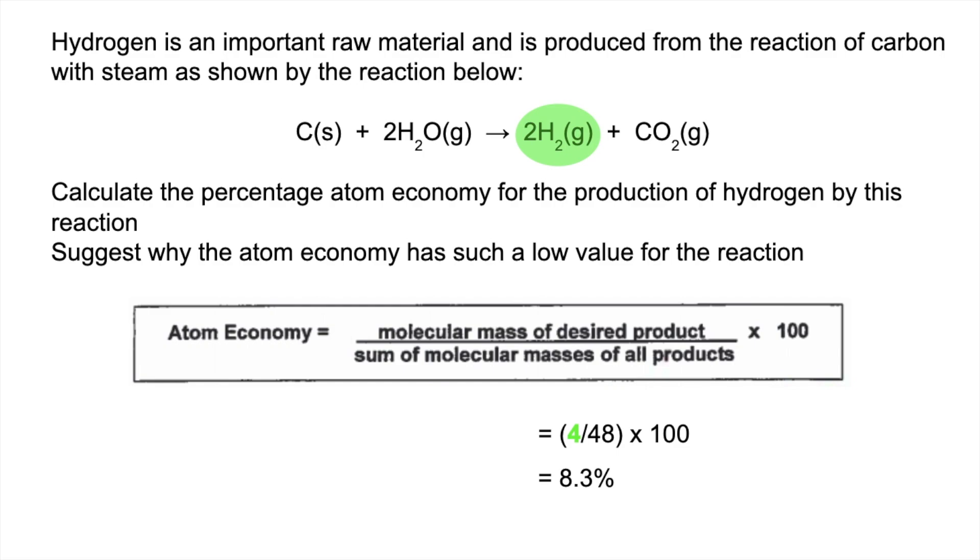So we've got to come up with a reason why the atom economy is so low for this reaction and that's down to the relative MRs of the desired product and the by-product the carbon dioxide. So carbon dioxide is a relatively high molecular mass compared to those 2 moles of hydrogen and obviously that's going to affect the percentage and make it low.